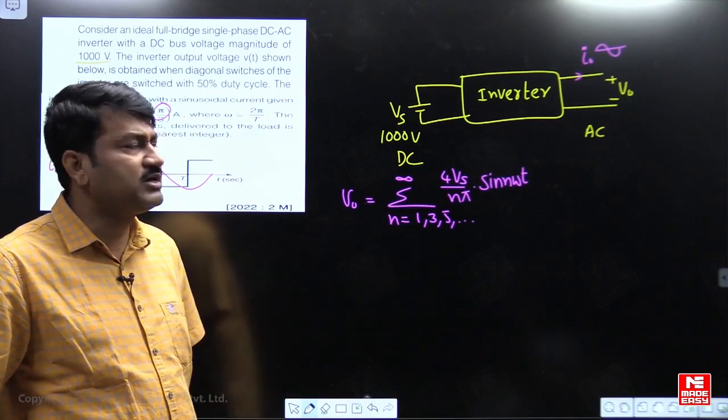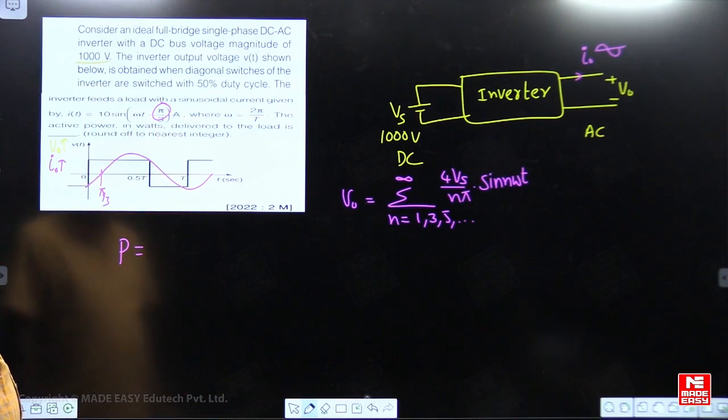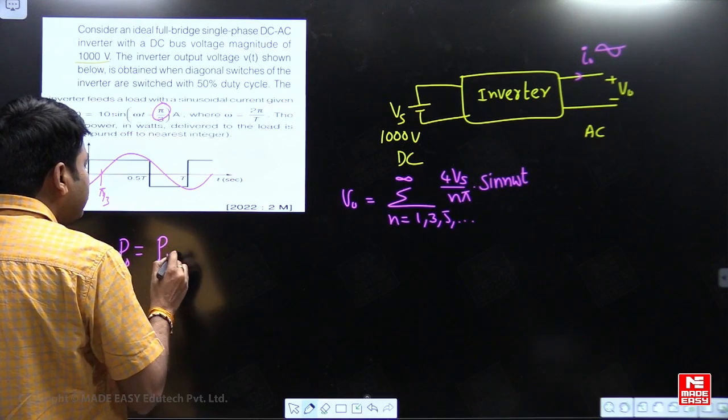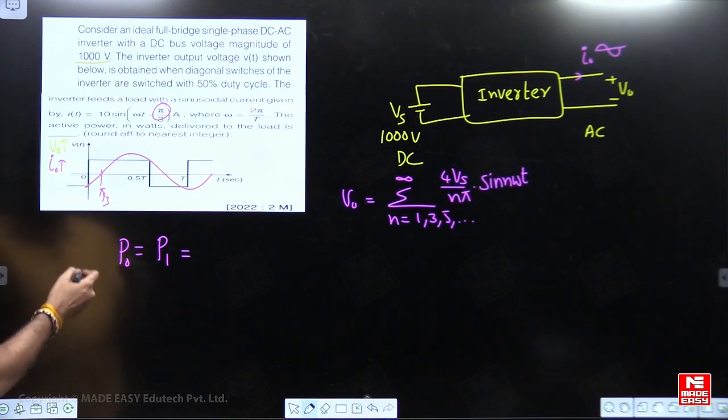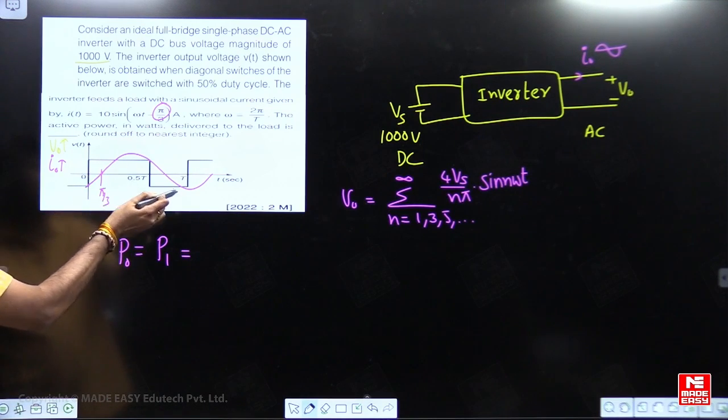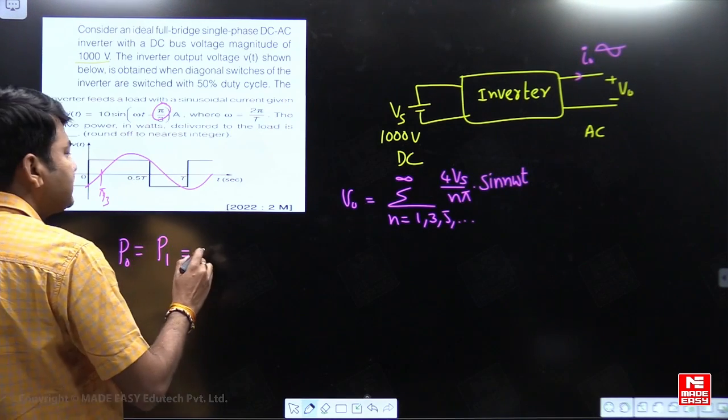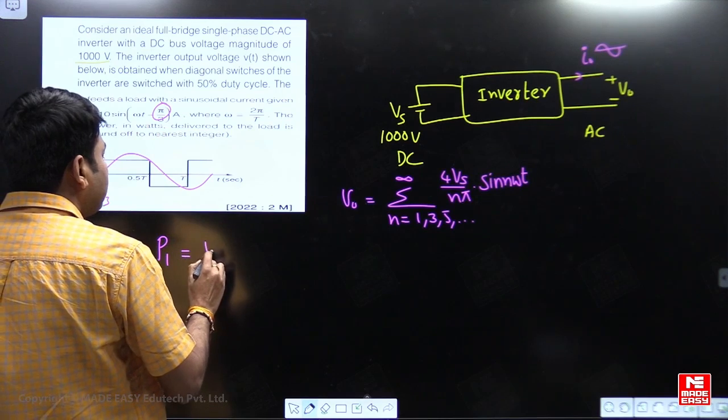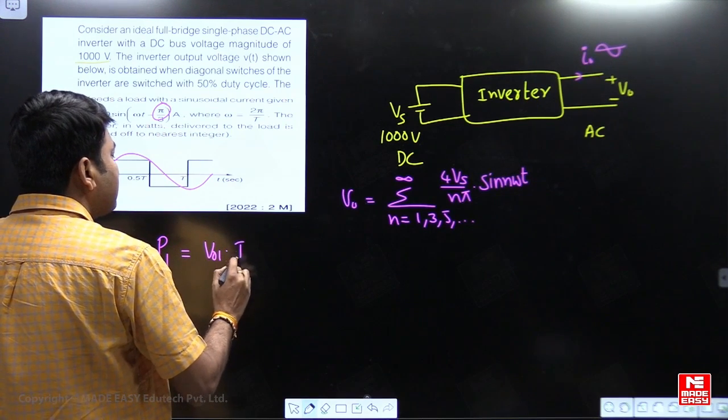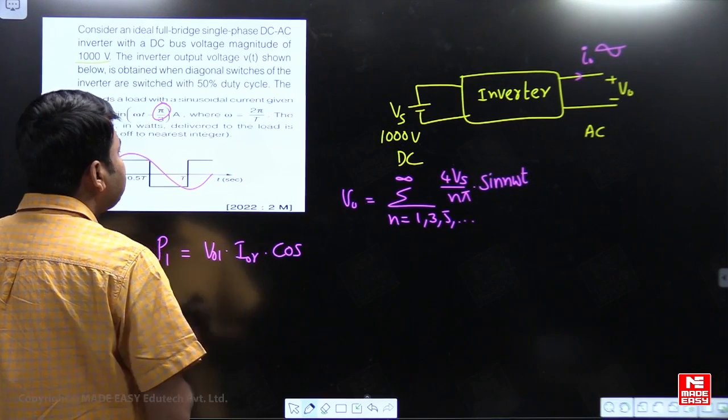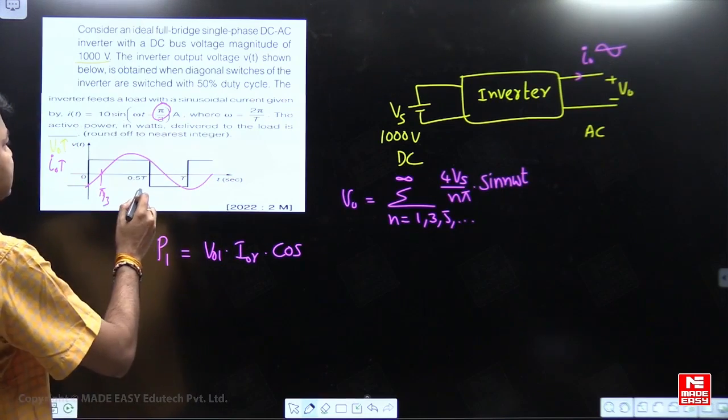And the current waveform is pure sinusoidal at same frequency, fundamental frequency. So here, the resultant output power is same as fundamental power. Because we are having current is sinusoidal at fundamental frequency. I don't have other AC components for current. So fundamental power is nothing but fundamental RMS voltage, RMS output current into cos of phase angle difference between voltage and current is pi by 3.